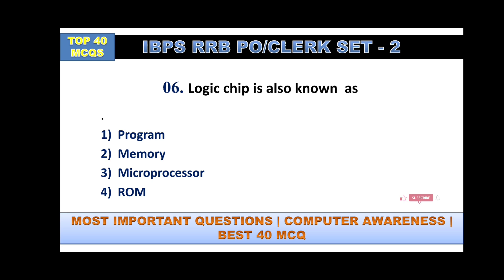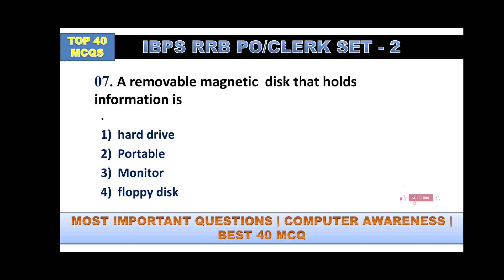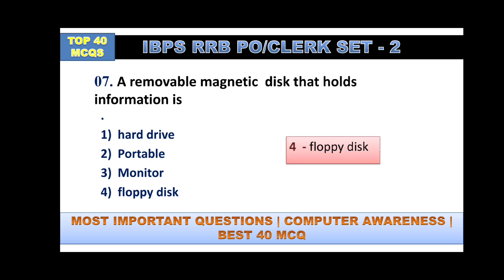Logic chip is also known as a program memory, microprocessor, or ROM? It is also known as microprocessor. A removable magnetic disk that holds information — hard drive, portable monitor, or floppy disk? Answer is option number four, floppy disk.